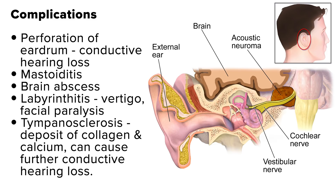Intracranial spread is extremely rare and usually causes meningitis, but brain abscess may also occur, due to the anatomy of the temporal bone. Severe headache, confusion, or neurologic signs may occur with intracranial spread of infection. Infection can also spread to the labyrinth or inner ear, causing vertigo or facial paralysis. Repeated infections can cause tympanosclerosis, a deposit of collagen and calcium in the middle ear, which can harden around the ossicles and cause further conductive hearing loss.